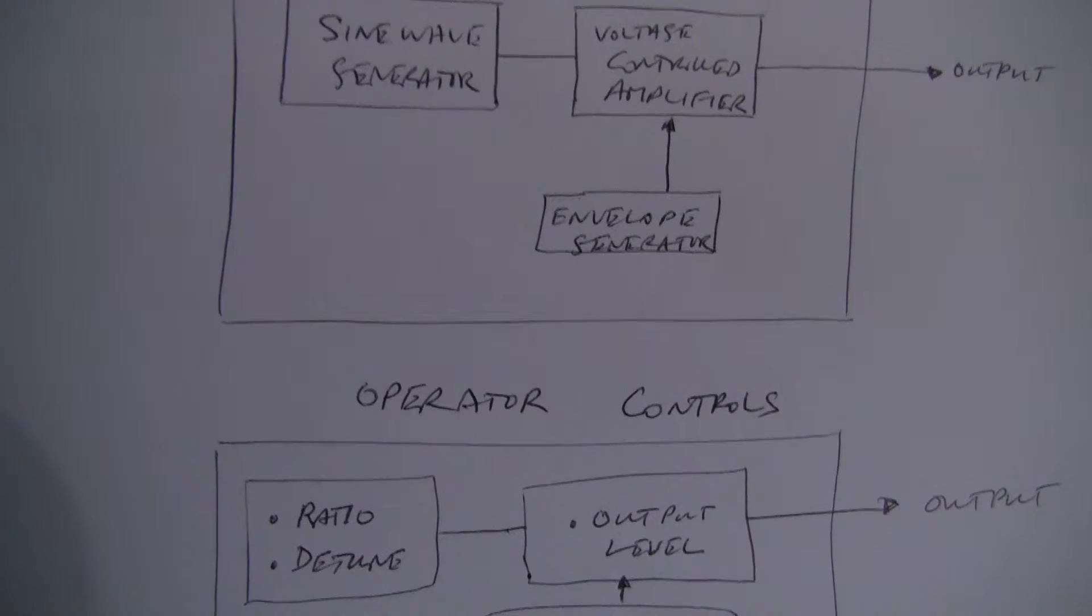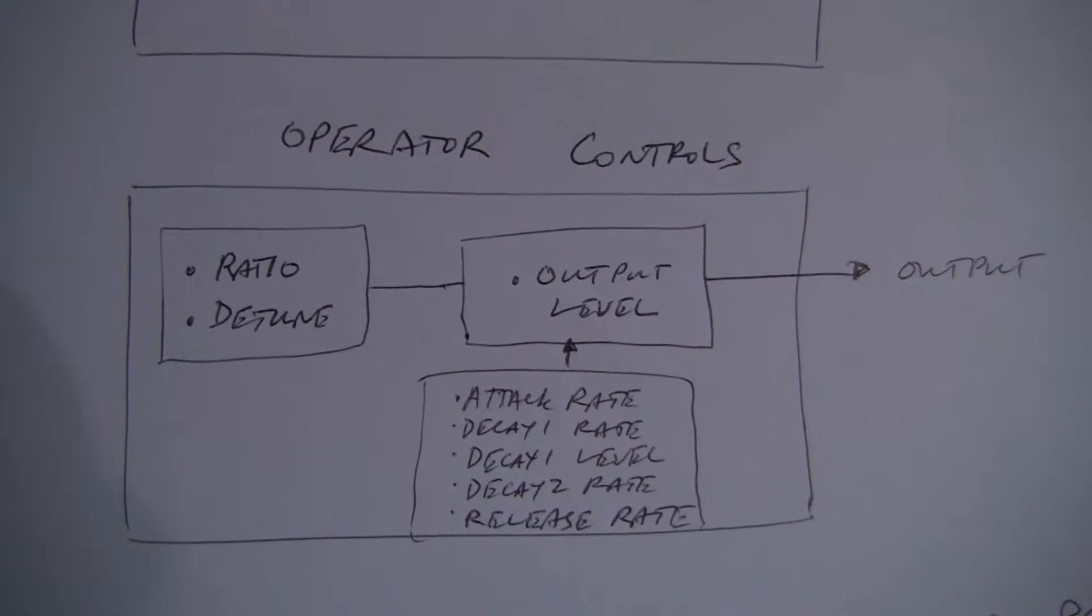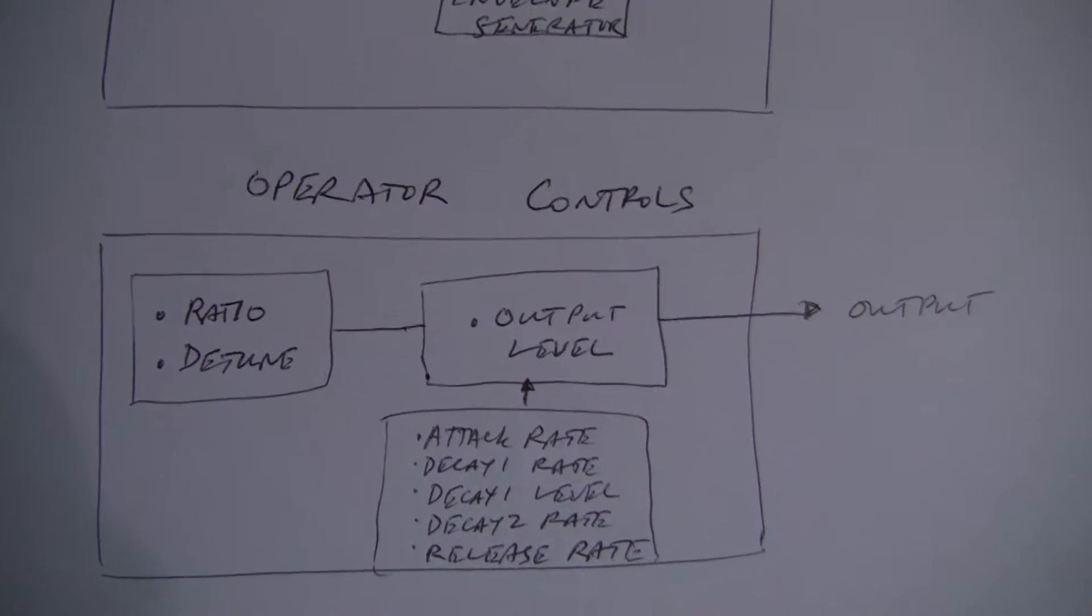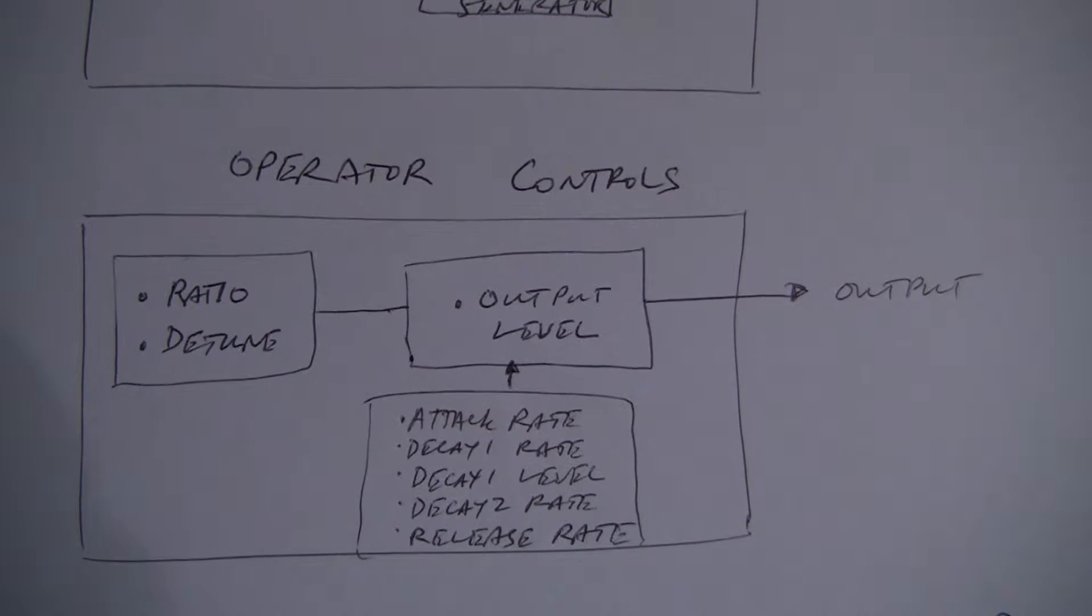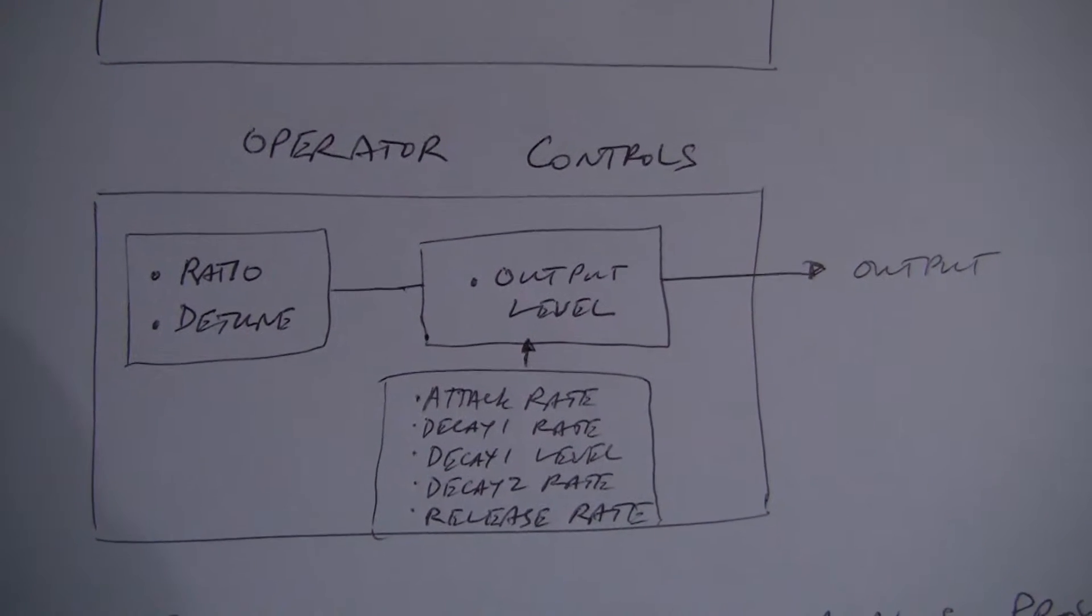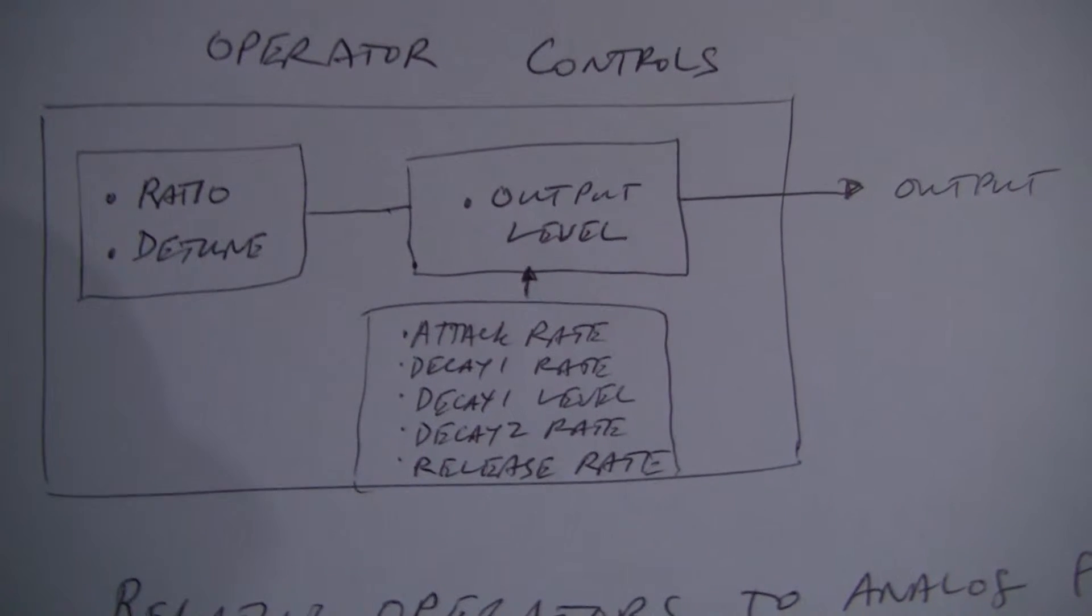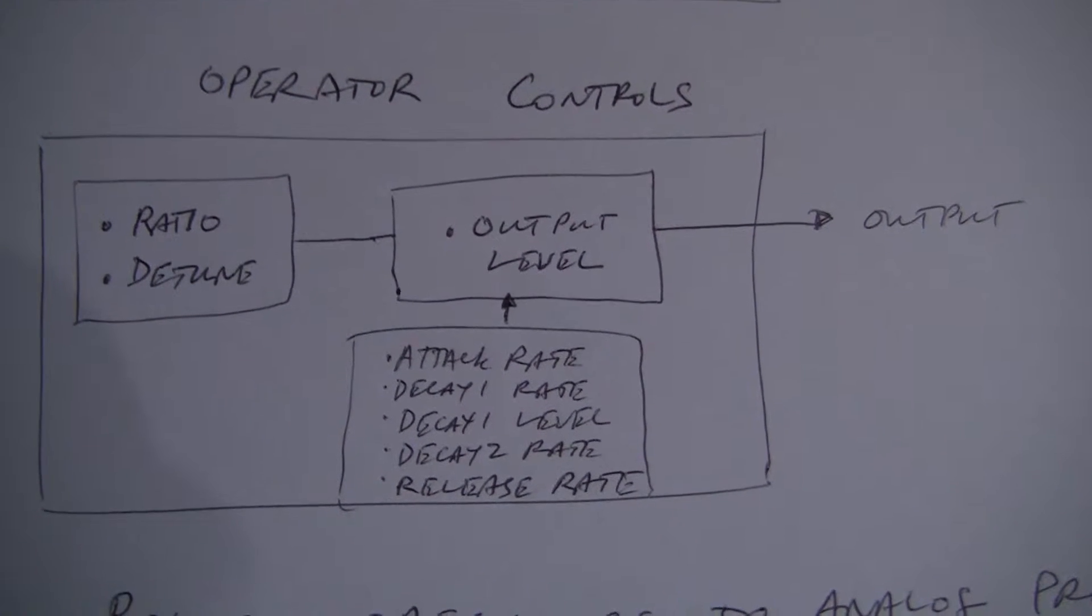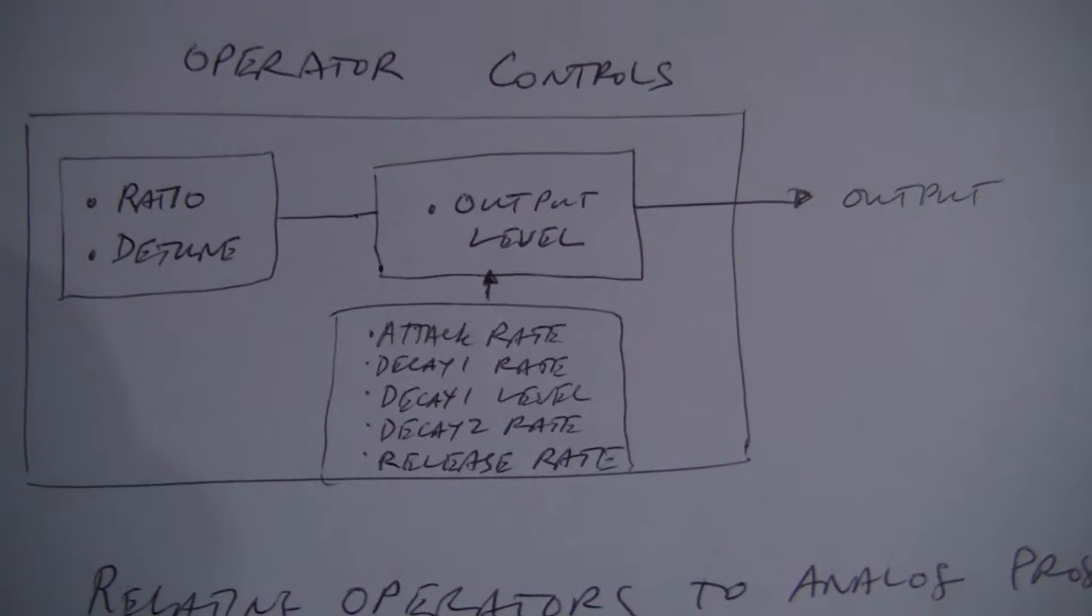What sort of controls do you have for an operator? You have an output level adjustment for each of the operators. You have a ratio tuning thing that sets the ratio relative to the keyboard pitch, and you have a detuning thing that just acts like a fine tune. And then, of course, your envelope generator, which we discussed already, has attack rate, decay rate, delay one level, delay two rate, and release rate.